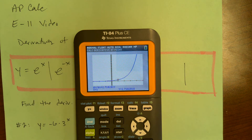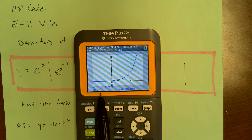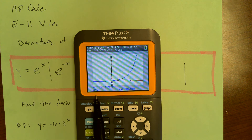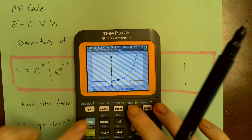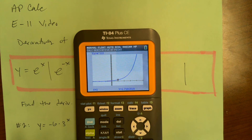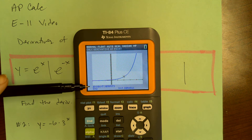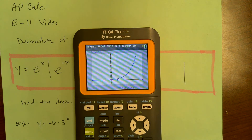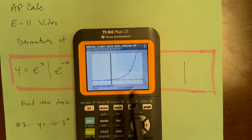At x equals 1, dy/dx is 2.718... Look at the x and y coordinates down here — the derivative is the same as the y coordinate. Let's do it again at x equals 2: the derivative is the same as the y coordinate. And at x equals 3: it happened again, the derivative is the same as the y coordinate.